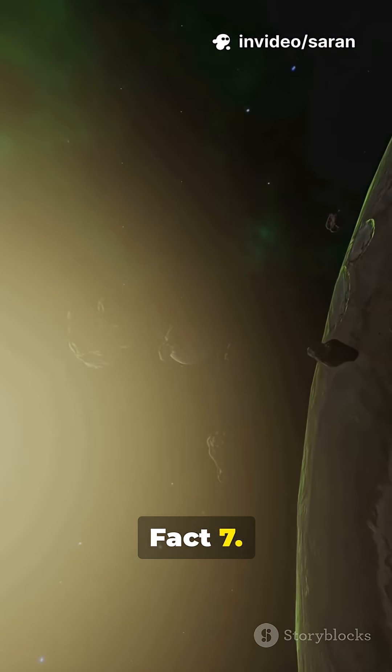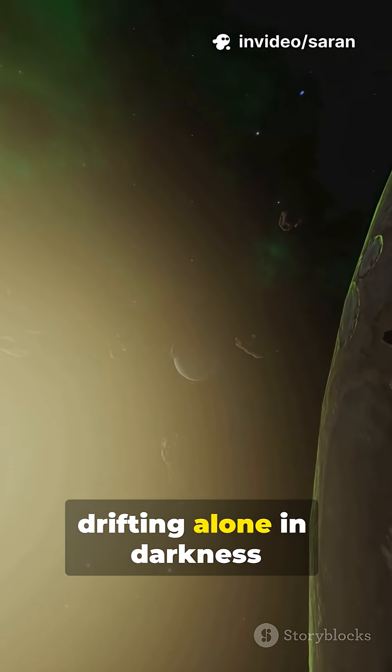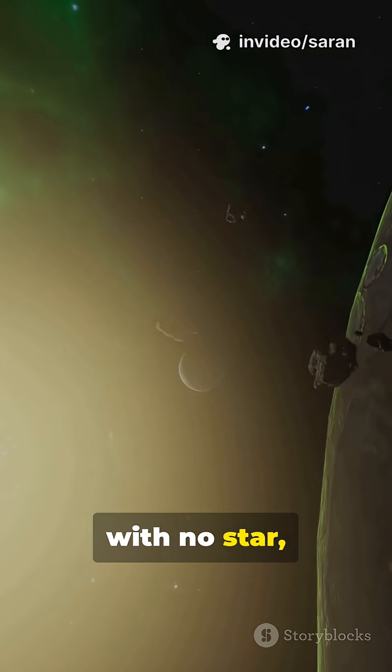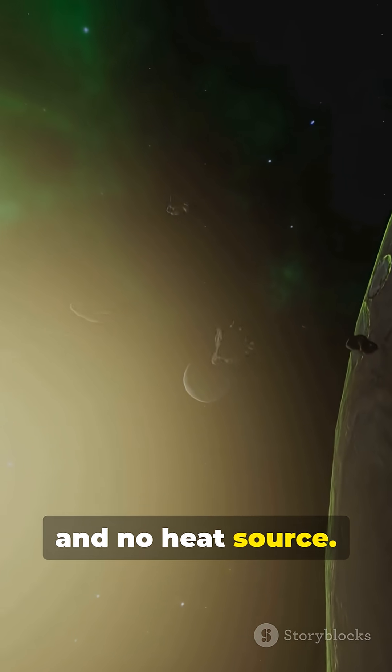Fact seven: There are rogue planets drifting alone in darkness with no star, no sunlight and no heat source.